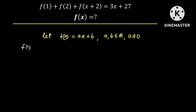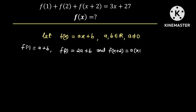We know f of 1 is just equal to a plus b. f of 2 is equal to 2a plus b. And f of x plus 2 is equal to a multiplied by x plus 2, plus b, which is equal to ax plus 2a plus b.